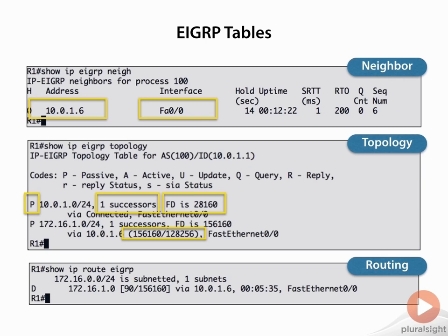Finally, we have the routing table. In that routing table you see the letter 'D'. If we look at the codes, 'D' is the EIGRP code, and they use 'D' because of the DUAL algorithm. We see the administrative distance for EIGRP is 90, and then 156,160 — the feasible distance from our topology table — appears in the routing table as the metric.